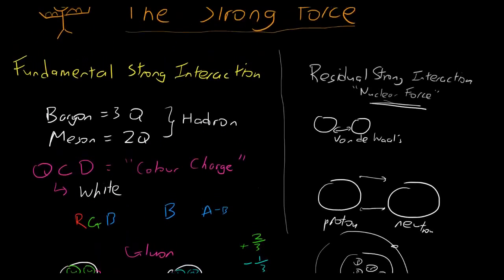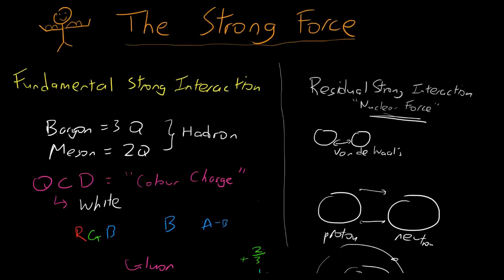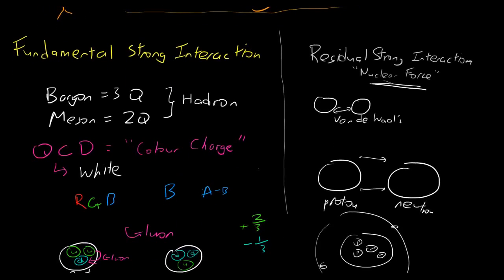So this is basically the strong force, which comes in two types. The fundamental strong force, which is mediated by the gluon, and the residual strong interaction, which is mediated by pions or mesons. But basically what we can come up with from this is that the residual strong interaction is a spin-off of the fundamental strong interaction. And in general, what the strong interaction does is that it holds protons together, it holds neutrons together, and it holds the nucleus together. Alright, see you guys in the next episode. Peace.